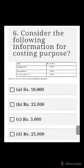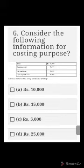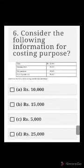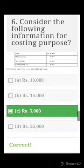Number six: given sales 80,000, opening stock 10,000, net purchases 45,000, and cost of goods sold 50,000 — determine the ending merchandise inventory. The formula is: opening stock plus purchases minus ending inventory equals cost of goods sold. So 10,000 plus 45,000 minus ending inventory equals 50,000, giving an ending inventory of 5,000.